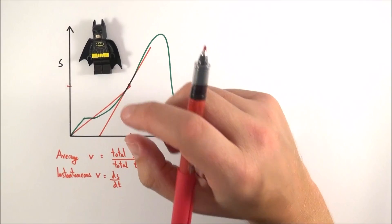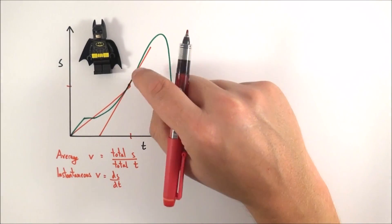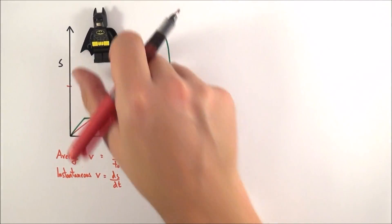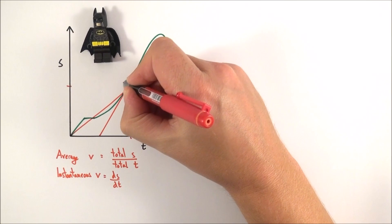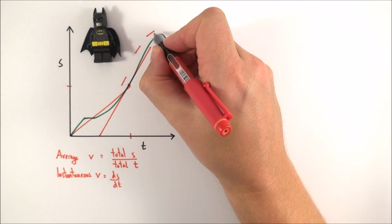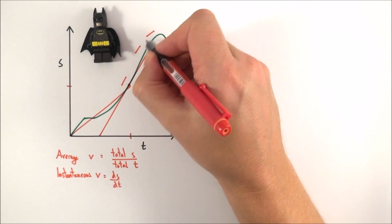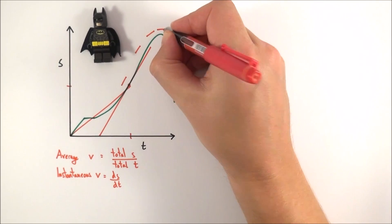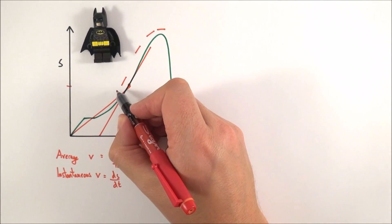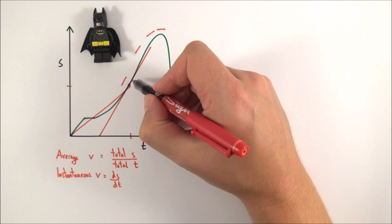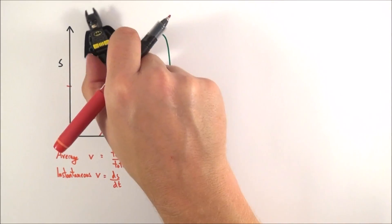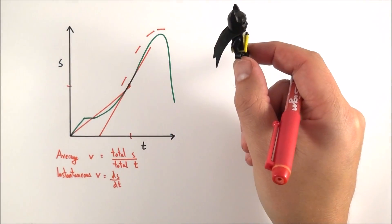This displacement graph shows how the velocity changes as Batman flies around. We've got quite a steep gradient initially. As time goes on, the gradient gets shallower and shallower until eventually there's a point where the gradient is zero. So down here they're increasing their velocity — they're accelerating. Then we have maybe a constant velocity, and at this point they're slowing down until they come to a complete stop. This is like Batman coming along, slowing down, and coming to a stop.